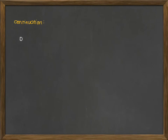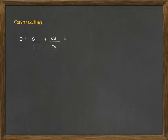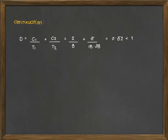Next we compute the dose: D = C1/T1 + C2/T2. Since we have two exposures, that is 2/8 + 5/18.38, which gives us 0.52. This is less than 1, which gives us the conclusion that our exposure is acceptable according to OSHA's standard.